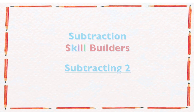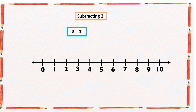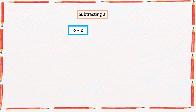Let's look at some examples. 8 minus 2 — we're going to make use of a number line. We're going to start from 8 and count two numbers backward: one, two. And the arrow ended at 6, so 8 minus 2 gives us 6.